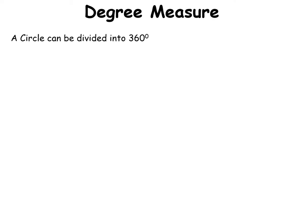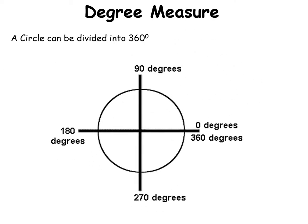A circle can be divided into 360 degrees. We start at 0 degrees and rotate anti-clockwise: 90 degrees, then 180, then 270, and back to 0. It follows the same direction as our quadrants 1, 2, 3 and 4.